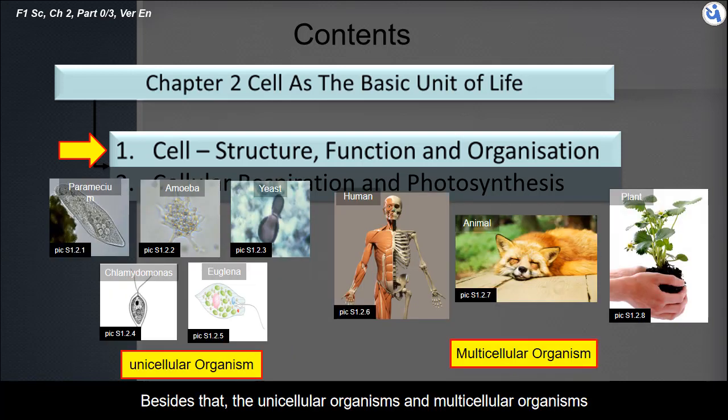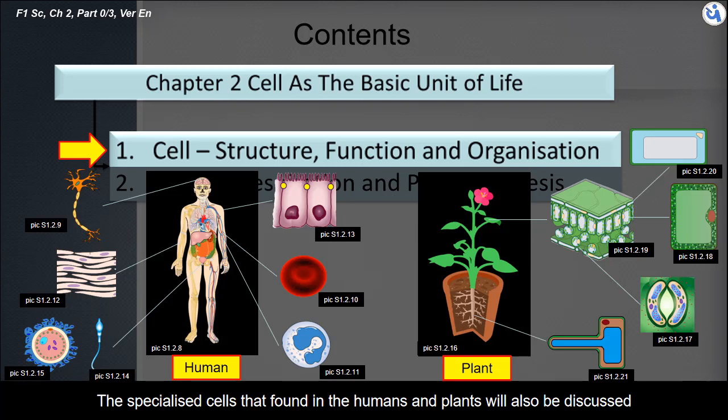Besides that, the unicellular organisms and multicellular organisms will be given the explanations for their definition and differences. The specialized cells that found in the humans and plants will also be discussed.